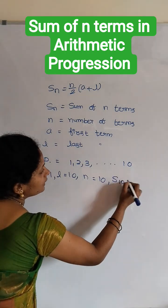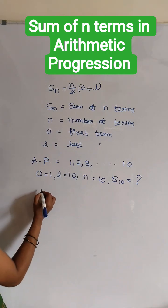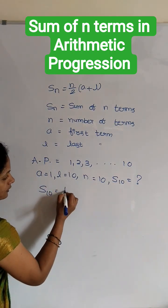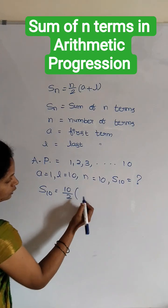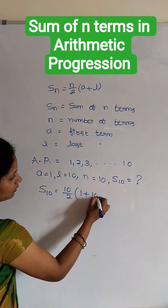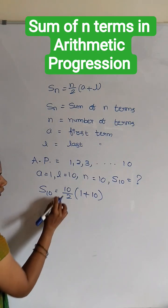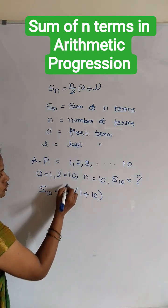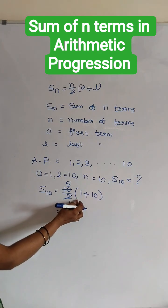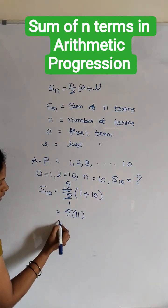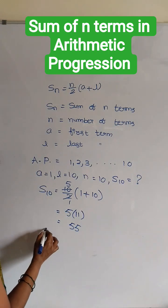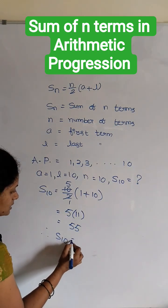Now we have to calculate S10. S10 is equals to n by 2, that is 10 by 2, into a plus l, which is 1 plus 10. That gives us 5 into 11, which equals 55. Therefore, S10 is 55.